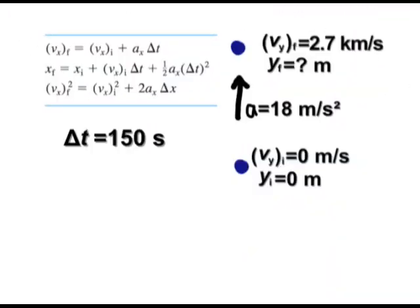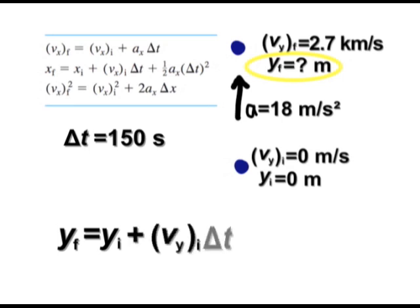Next piece we're asked to find is the position. I want the final position. So yf. And I'm going to use that basic equation. It's equal to yi plus the initial y velocity times Δt plus one-half times the y acceleration times Δt squared. That's what I'm looking for.